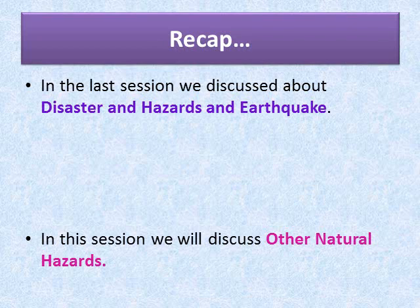In the last session we discussed about disaster, hazard, and earthquake. A hazard is a dangerous phenomenon, substance, human activity, or condition that may cause loss of life, injury, health impacts, property damage, loss of livelihoods, services, social and economic disruption, or environmental changes. If it is a naturally occurring phenomenon, it is called a natural hazard. We can classify natural hazards into two types: geophysical and biological.